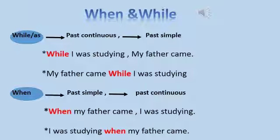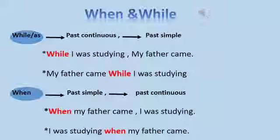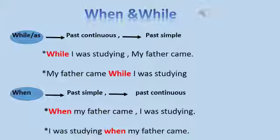For example, while I was studying, my father came. We can notice that while is followed by the past continuous tense and the other sentence becomes the past simple. When we use when, we put the past simple after it and the second sentence will be in the past continuous. So while or as is followed by the past continuous, but when is followed by past simple tense. For example, when my father came, I was studying.